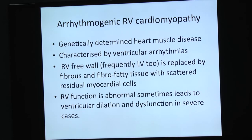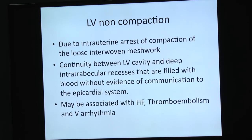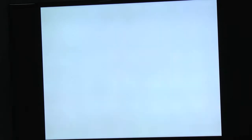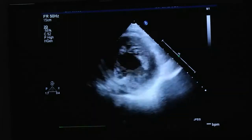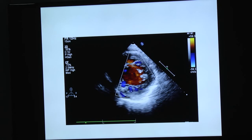Arrhythmogenic right ventricular cardiomyopathy: the RV free wall is replaced by fibrous and fibro-fatty tissue with scattered residual myocardial cells. RV function is abnormal, sometimes leading to ventricular dilatation and dysfunction. Non-compaction cardiomyopathy involves continuity between the LV cavity and deep intra-trabecular recesses filled with blood, without evidence of communication to the epicardial coronary system. Videos show the trabecular recesses and color Doppler seeping into the non-compacted LV muscle.